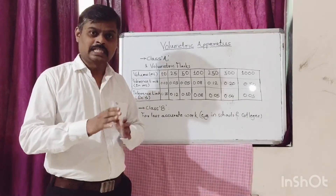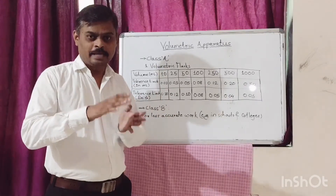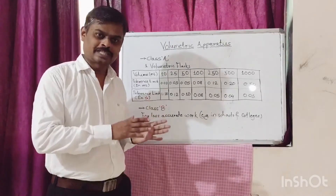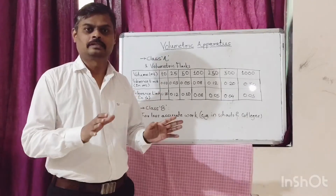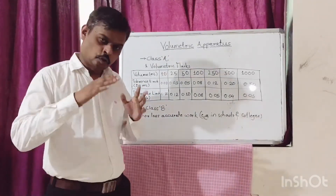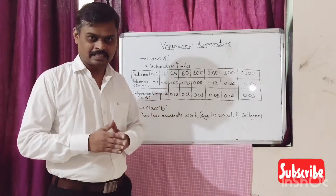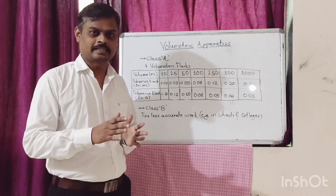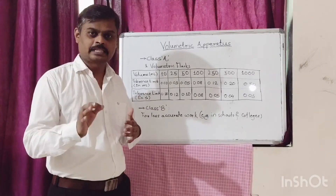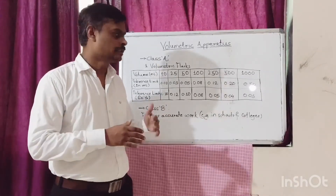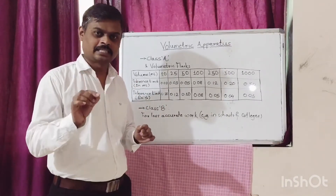Class A glassware does not require further in-house calibration before putting it into routine use. You can use Class A glassware directly for your analysis without further calibration in the laboratory. The tolerance limits for Class A glassware should comply with the standards mentioned by NIST, that is, National Institute for Standards and Technology, and ASTM E694.